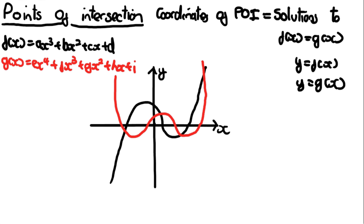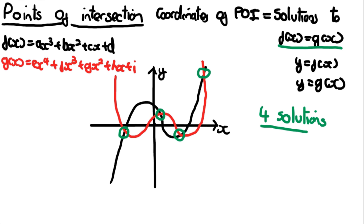This graph is still useful because the coordinates of the points of intersection equal the solutions to the equation. The number of points of intersections is going to equal the number of solutions. Looking at this graph, there's a point of intersection here, here, here, and here — so there are four solutions to f(x) = g(x). It's very common in an exam that they give you a graph and ask you to find the number of solutions — all you need to do is count the points of intersections.